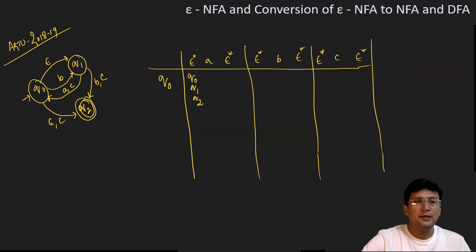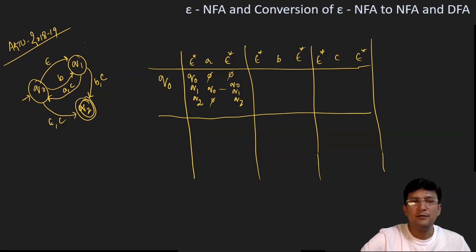q0 on 'a' is not defined, q1 on 'a' moves to q0, and q2 on 'a' is not defined. So the epsilon closure for 'a' — epsilon closure of q0 — will be {q0, q1, q2}, which has already been defined. Now epsilon closure of q0 is {q0, q1, q2}, we already have computed that.